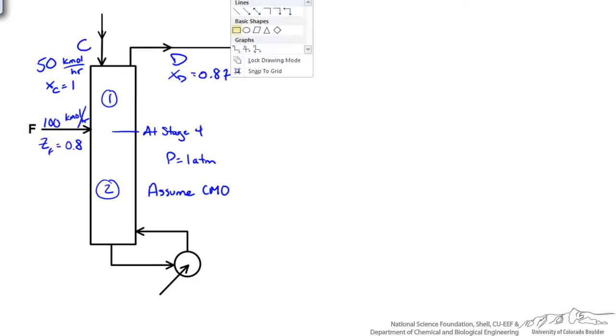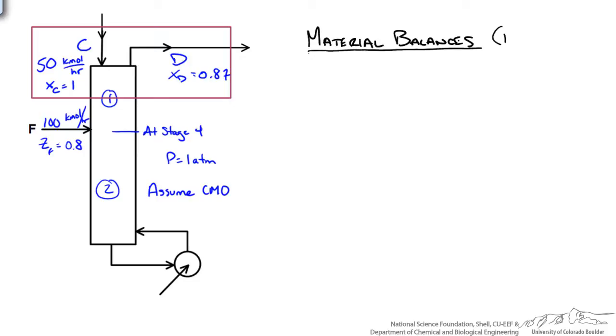Let's determine the area we are interested in for our material balance and look at the top section first. Draw a box around that area and write out our material balances. Our overall balance would look like the following: we have C entering plus vapor V coming up our column. We would have D leaving and some liquid also going down our column, leaving the top section. We could also write a component balance in terms of mole fractions for acetone.